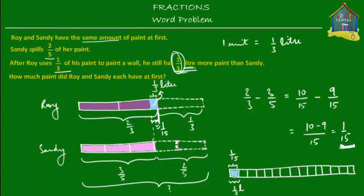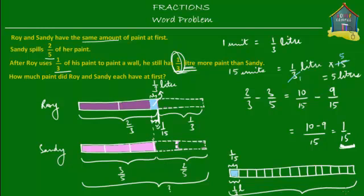There are 15 of these units, so 15 units equals one-third of a litre times 15, which simplifies to five litres. This means if one blue unit equals one-third of a litre, then all 15 units combined equal five litres. These 15 units represent the amount of paint Roy had at first — or Sandy, since both had the same amount. So Roy and Sandy each had five litres of paint at first, which is what we were asked to find.